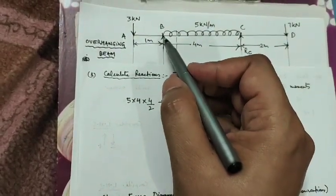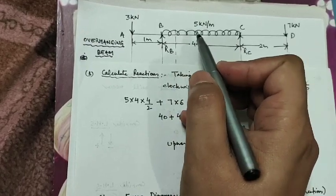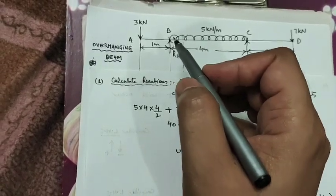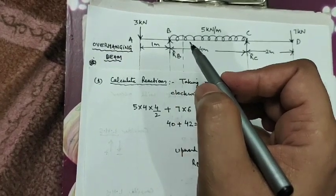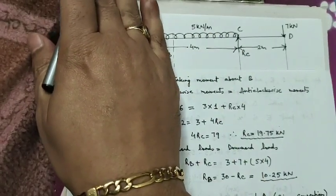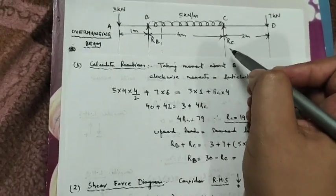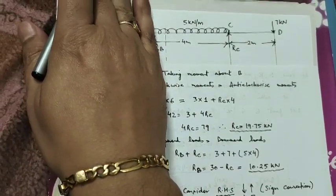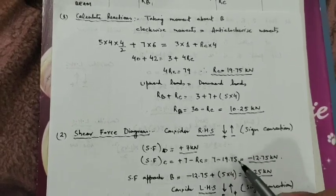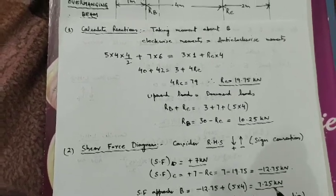Now we will find the shear force at point B. From C to B the UDL is continuously acting. First we find how much shear force is contributed by the UDL approaching point B, and then find the shear force at B by adding this value. Due to the UDL at point B, 5 into 4 acts as a downward force (positive). So the shear force approaching B equals the shear force at C plus the UDL contribution 5 into 4, giving 7.25 kN.